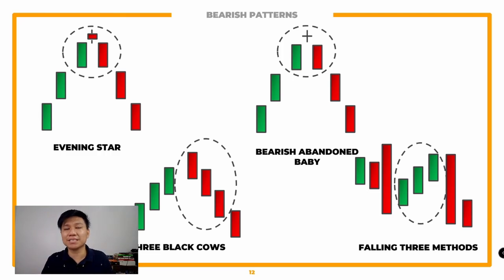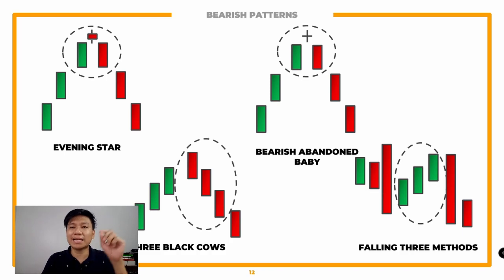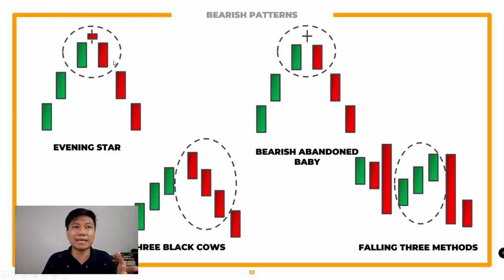Meron naman tayong mga bearish three-candlestick patterns — paulit-ulit lang rin pero ganyan talaga ang trabaho nito. Meron tayong evening star at bearish abandoned baby — ito yung mga doji candlesticks na usually nag-gap up yung price for that day. Yun nga lang, hindi na na-sustain ng mga buyers. Lumakas na rin yung mga bears or sellers. The third candlestick confirms na it's a downtrend — very strong indication na magre-reverse na rin yung current price. If it's an uptrend, it will go to a downtrend na rin.